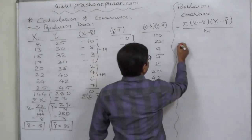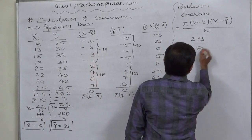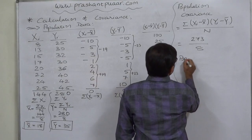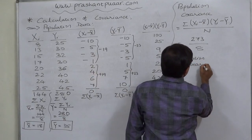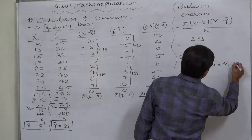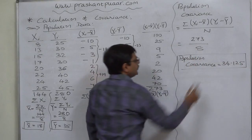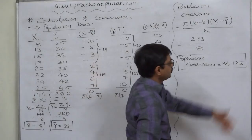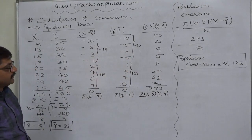Sigma x minus x bar into y minus y bar divided by just population size, not subtract 1. 273 divided by 8. So, population covariance comes to approximately 34.125. You can take the value in single or two decimal according to your choice or the institute in which you follow the rule.